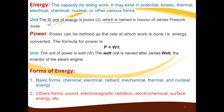Energy is nothing but the capacity for doing work. Now we have another concept called power. Power is defined as the rate at which work is done. We convert energy into power. Mathematically, power equals work divided by time — P = W / t — where W is work done, t is time, and P is power.